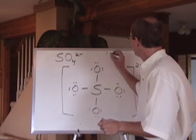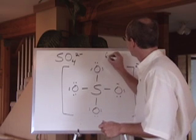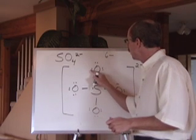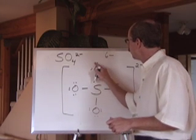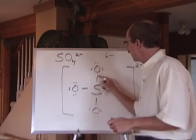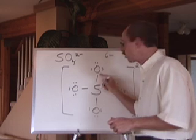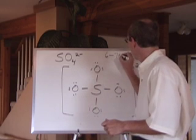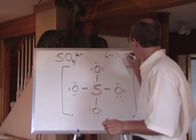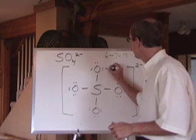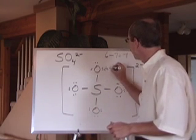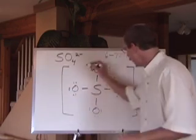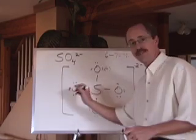Watch this. Oxygen is normally in group 6. Subtract from it 2, 4, 6 lone pair electrons and 1 electron from the bond — that's 7. So it has a formal charge of negative 1, and we put it there. All of these oxygens are the same.